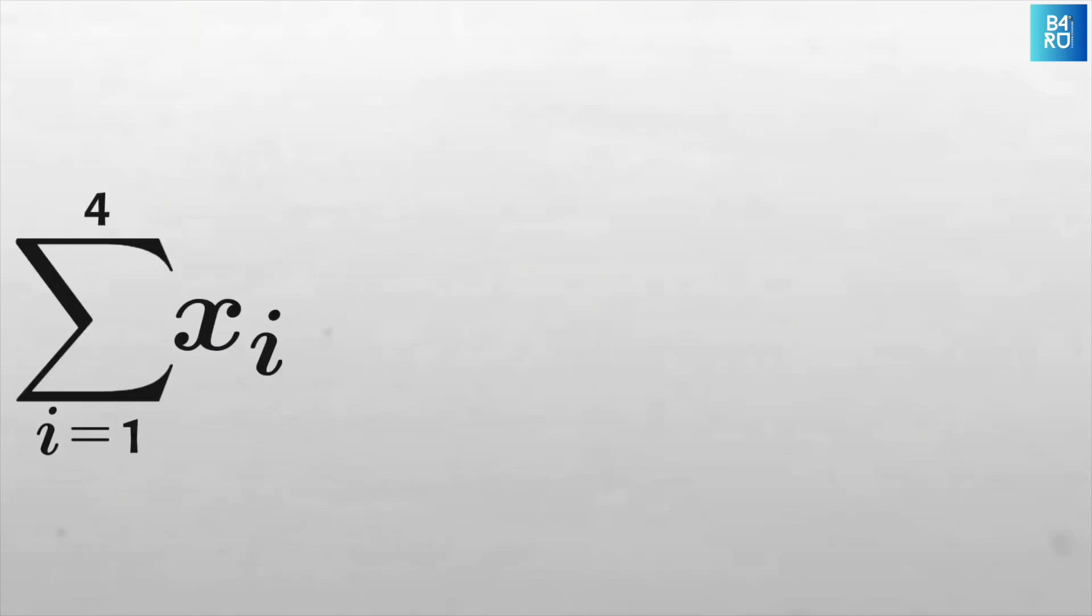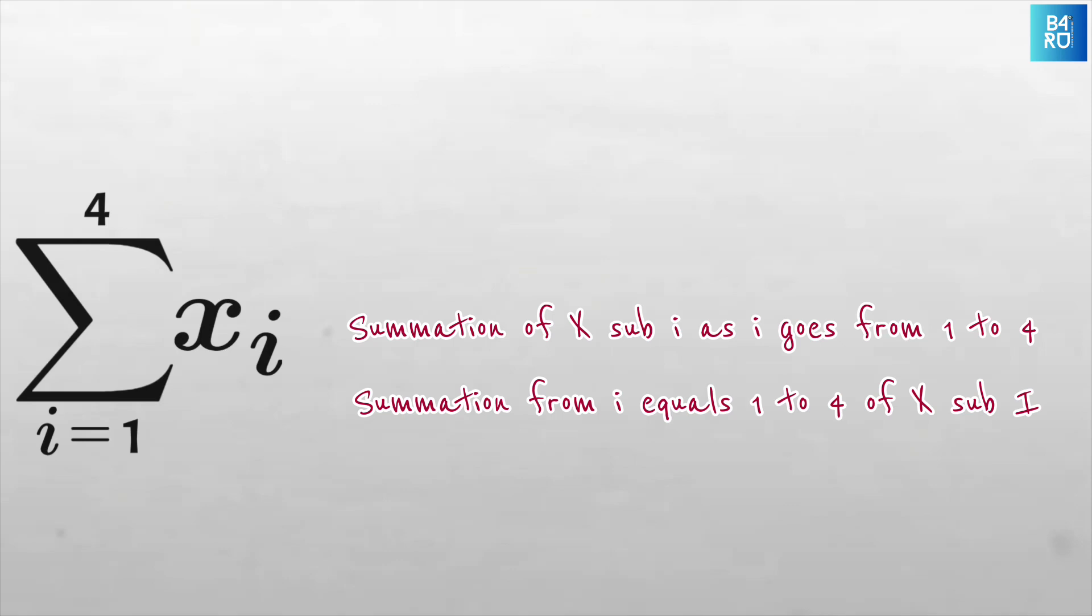So read this whole thing as the summation of x sub i as i goes from 1 to 4. Or like I said in the beginning, we could also read this as the summation from i equals 1 to 4 of x sub i. This simply means we should sum all the values of x when the index value goes from 1 sequentially to 4.